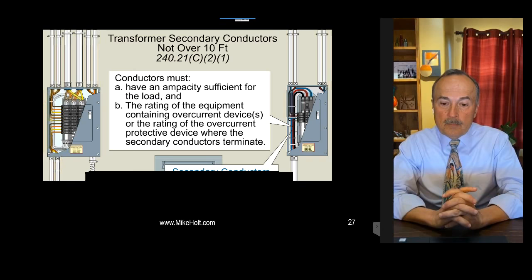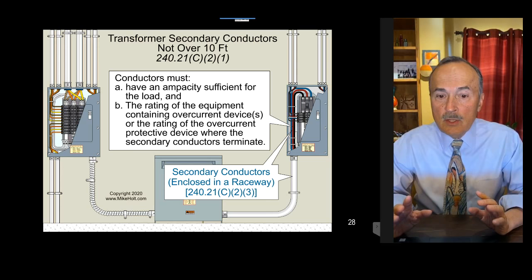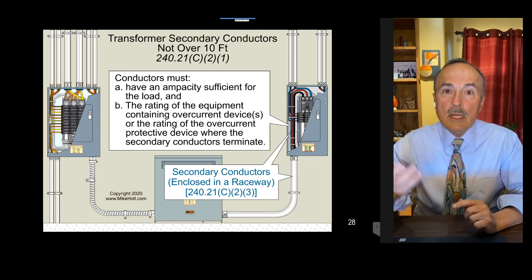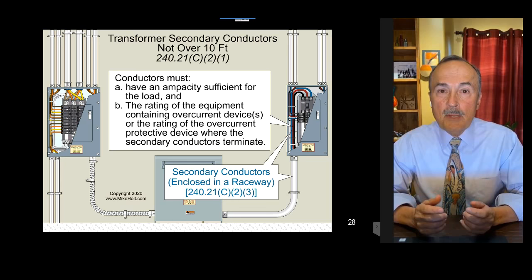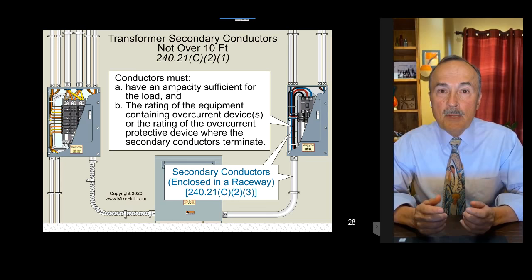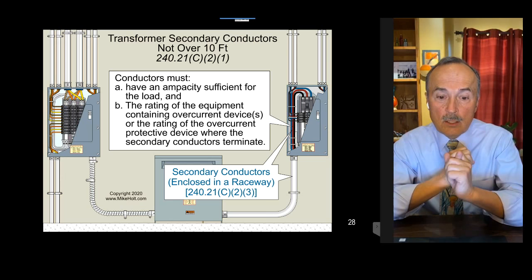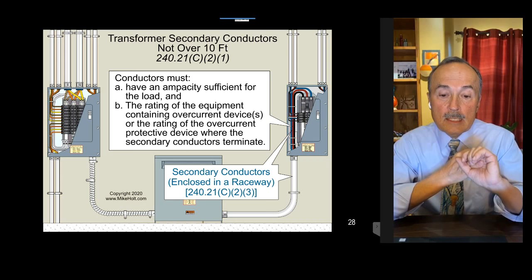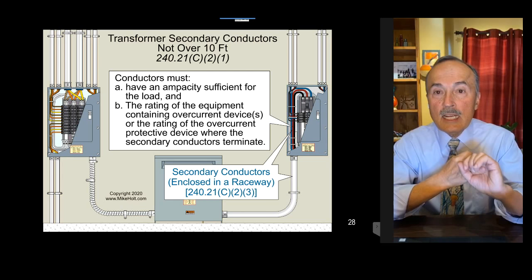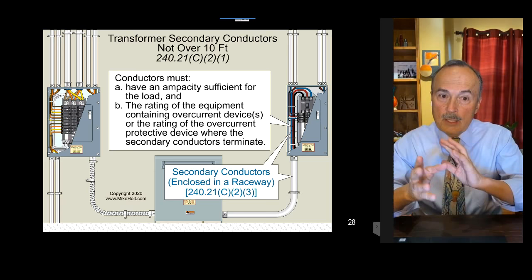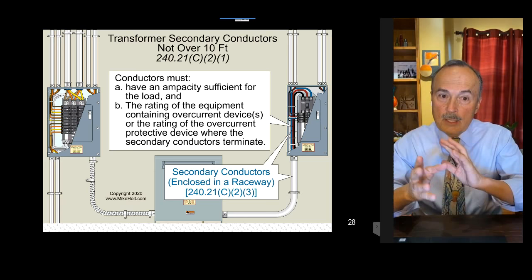Under 240.21(C)(1), not over 10 feet: number one, the conductor must have an ampacity sufficient for the load. You do a load calculation, figure out what load you need, then size the transformer, then size the secondary conductors. Number two, the conductor ampacity must be no less than the rating of the equipment containing overcurrent devices, or the rating of the overcurrent protection device where the secondary conductors terminate. So your secondary conductors are required to terminate in an overcurrent device.